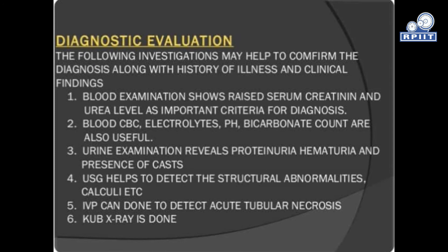Diagnostic evaluation: Blood examination shows raised serum creatinine and urea levels as important criteria for diagnosis. Blood CBC, electrolytes, pH, and bicarbonate count are also useful. Urine examination reveals proteinuria, hematuria, and presence of casts. USG helps to detect structural abnormalities and calculi. IVP can be done to detect acute tubular necrosis, and KUB X-ray is also performed.